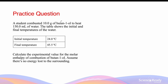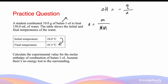A student combusted 10 grams of butanol to heat up 150 millilitres of water. The table shows the initial and final temperatures of the water, and we can see that the initial temperature has risen from 24 degrees Celsius to 45.5 degrees Celsius. Calculate the experimental value for the molar enthalpy of combustion for butanol, and assume there's no energy lost to the surrounding. We know that molar enthalpy of combustion is equal to minus Q over N, where Q is the amount of energy absorbed by the water. We can first find the moles of butanol that was used for the combustion, which is given by the mass of butanol divided by the molar mass. The molecular formula of butanol is C4H10O, 4 carbons,